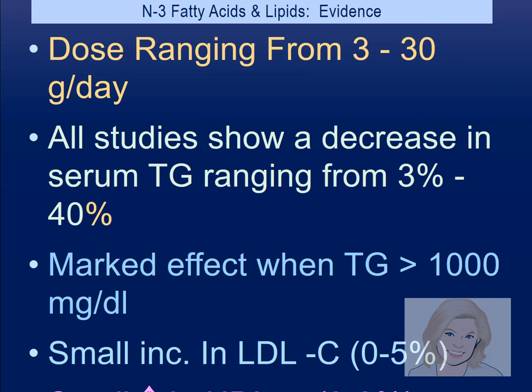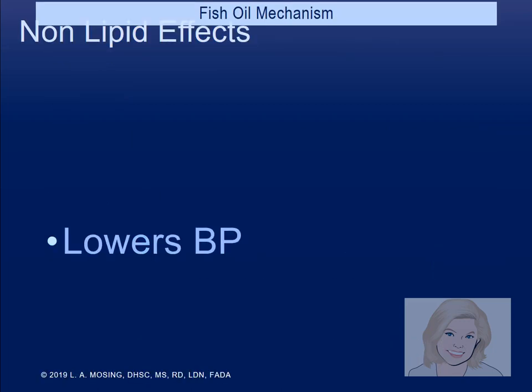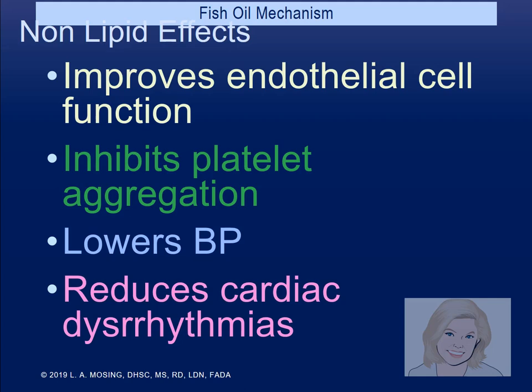Fish: the omega-3 fatty acids in fish, dosed from 3 to 30 grams a day, help lower serum cholesterol by 3 to 40%. Fish oil reduces the stickiness of platelets, improves endothelial cell function, inhibits platelet aggregation, lowers blood pressure, and reduces inflammation — since coronary heart disease is an inflammatory process. It also reduces the risk of cardiac dysrhythmia.